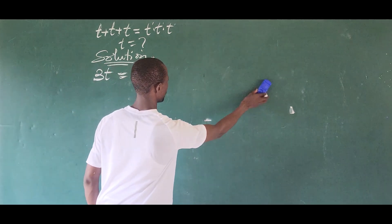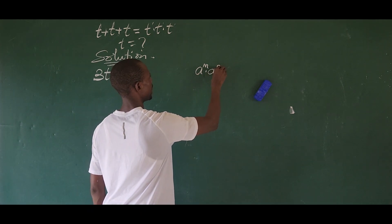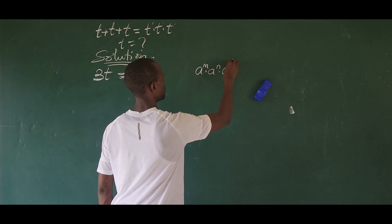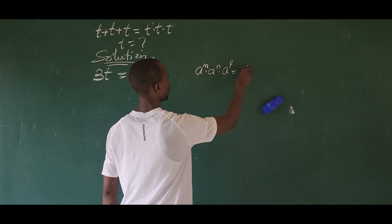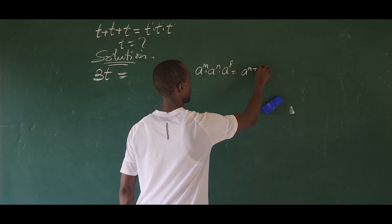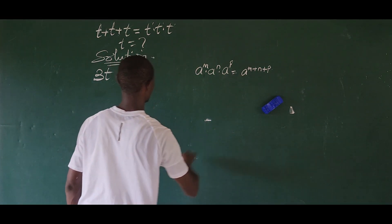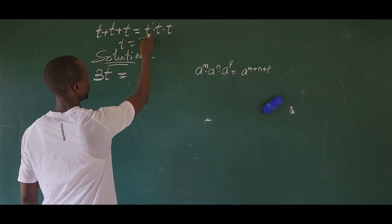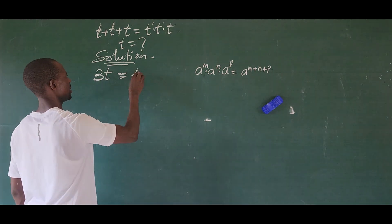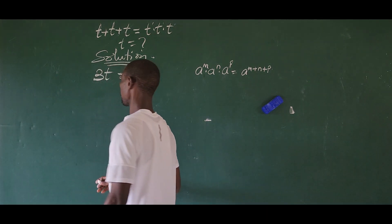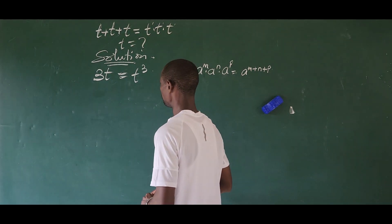Each t has an exponent of one, so we add them all together. The law states that a to the power of m, times a to the power of n, times a to the power of p equals a to the power of m plus n plus p. So t times t times t gives us t raised to the power of one plus one plus one, which is t to the power of three.